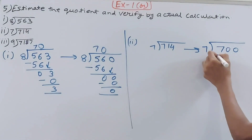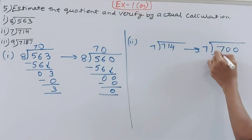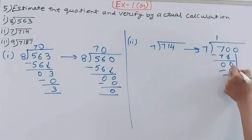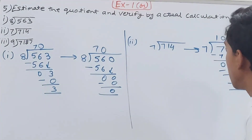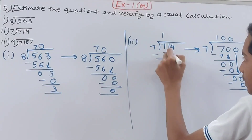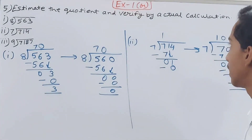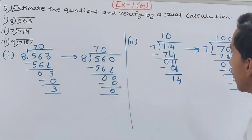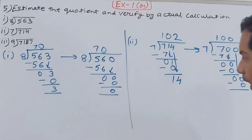For the estimated: 700 ÷ 7 — 7 goes 1 time, bring down 0, minus 0, bring down another 0, minus 0 — gives quotient 100. For the actual: 714 ÷ 7 — 7 into 7 is 1, bring down 1, 1 won't go by 7 so put 0, bring down 4, giving 14. 7 into 2 is 14, so quotient is 102.